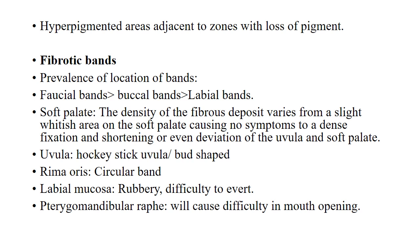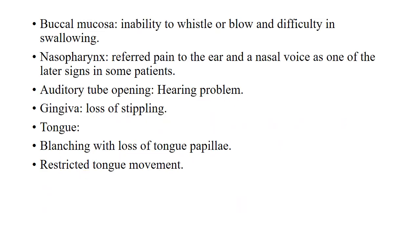Sometimes hyperpigmented areas adjacent to zones with loss of pigment can also be seen. Fibrotic bands appear first in the faucial area, then the buccal area, and then the labial area. On the soft palate, the density of fibrous deposit varies from a slight whitish area causing no symptoms to dense fixation and shortening or deviation of the uvula — a hockey-stick or bud-shaped uvula. Circular bands can be seen in the rima oris region. Labial mucosa becomes rubbery and difficult to evert. Bands in the pterygomandibular raphe cause difficulty in mouth opening. Buccal mucosa bands cause inability to whistle or blow and difficulty in swallowing. Bands in the nasopharyngeal area cause referred pain to the ear and a nasal voice. Bands in the auditory tube opening cause hearing problems. There is loss of stippling of gingiva, blanching with loss of papillae on the tongue, and restricted tongue movement.